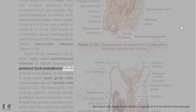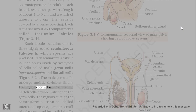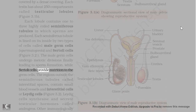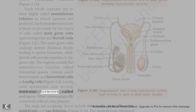Each seminiferous tubule is lined on its inside by two types of cells called male germ cells (spermatogonia) and Sertoli cells. The male germ cells undergo meiotic divisions finally leading to sperm formation, while Sertoli cells provide nutrition to the germ cells. The regions outside the seminiferous tubules, called interstitial spaces, contain small blood vessels and interstitial cells or Leydig cells. Leydig cells synthesize and secrete testicular hormones called androgens.